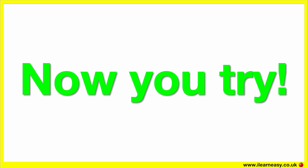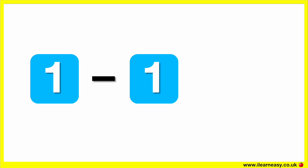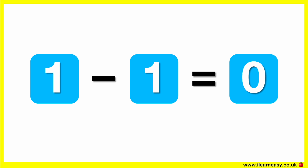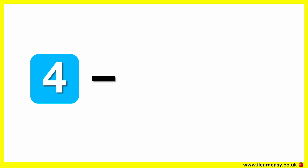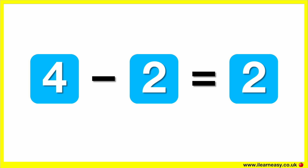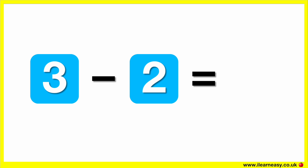Now you try. Can you subtract these numbers? What is one minus one? The correct answer is zero. One minus one equals zero. What is four minus two? The correct answer is two.